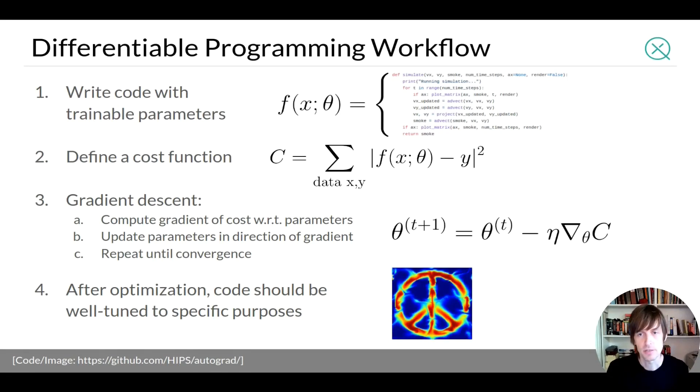Again you want to define a cost function this can actually look very similar to a deep learning cost function where you compare the desired results to the results achieved with a particular set of parameters and then tune the parameters. And again we can use gradient descent as a rule for optimizing this cost function. And after optimization this code should now be very well tuned to specific purposes which may go beyond what a machine learning model is meant to do which is usually to make predictions or to fit functions.